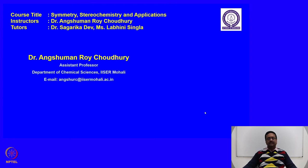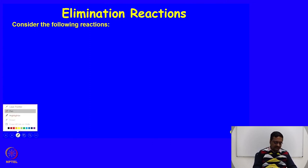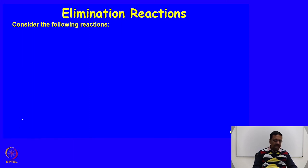In the last few lectures we have discussed about the substitution reactions and stereochemical aspects of SN1 and SN2 reactions. Today we will start the next part of this course where we will try to understand the stereochemistry of elimination reactions. Let us consider a few reactions which we have already seen in our previous few classes.